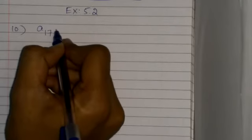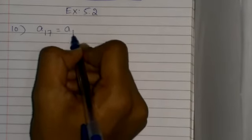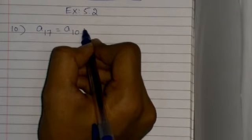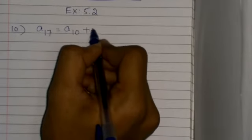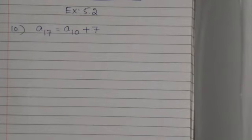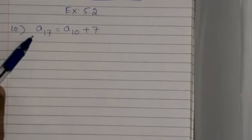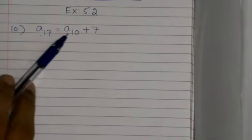Question 10: They have given that the 17th term of an AP exceeds its 10th term by 7. Find the common difference. The 17th term, a17, exceeds the 10th term, a10, by 7. So we can write this as a17 = a10 + 7.